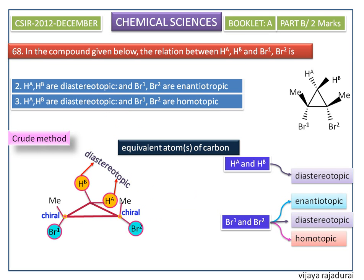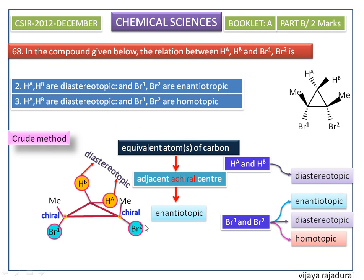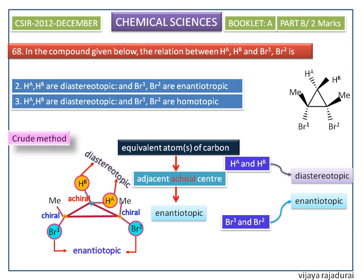Next, we look at enantiotopic: equivalent atoms on a carbon having only one adjacent chiral center are said to be enantiotopic. BR1 and BR2 are atoms on a carbon having one adjacent chiral carbon center. So, BR1 and BR2 are enantiotopic.